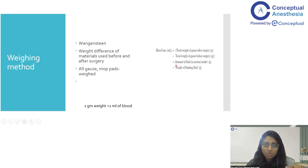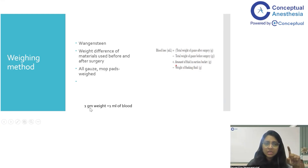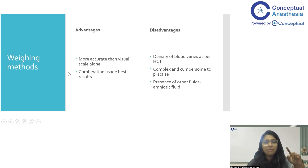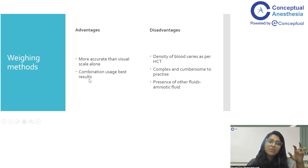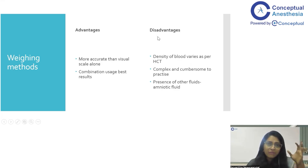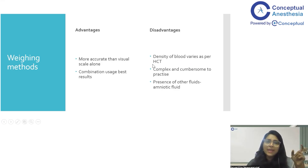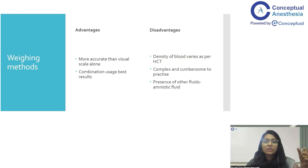The formula for total blood loss is: total weight of gauze after surgery minus total weight of gauze before surgery, plus the amount of fluid in the suction bucket, minus the weight of the flushing fluid. You weigh the flushing fluid — for example, one litre of normal saline — and subtract it. Everything is measured in grams, which translates to ml of blood loss. When combined with visual methods, this approach is more accurate. The disadvantage is that blood density varies with hematocrit, and the perioperative period is notorious for hematocrit fluctuations, so one gram does not always equal exactly one ml of blood.